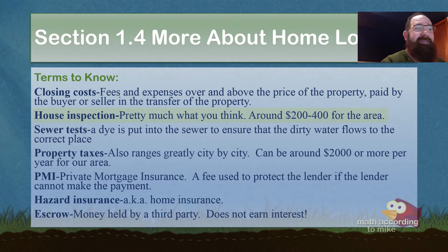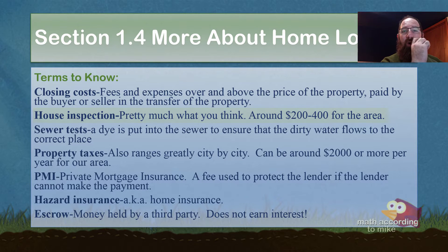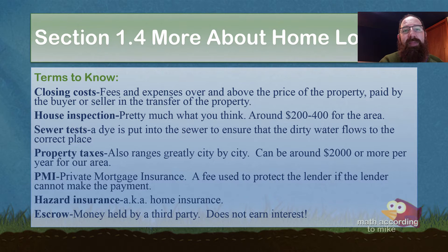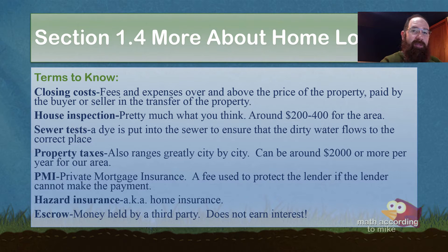Next up is house inspection. Someone walks around with you and tells you what's wrong with your house. For our area in Northeast Ohio, it's about $200 to $400 per house — keyword: per. Meaning if you narrow it down to six houses and inspect them all, that's like $2,000 worth of inspections. So try to narrow it down to one or two houses.